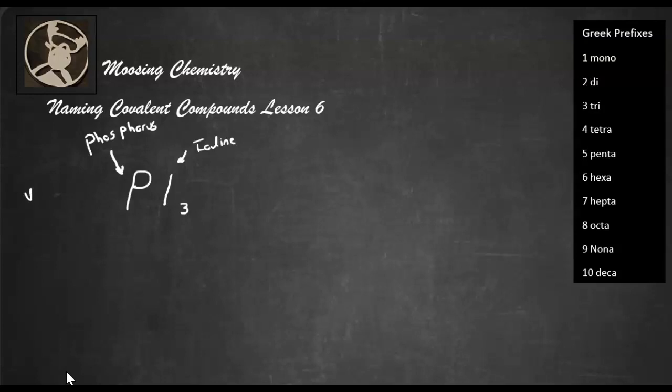All right, both phosphorus and iodine are both non-metals. So if you have two non-metals chemically combined together, we get a covalent compound.